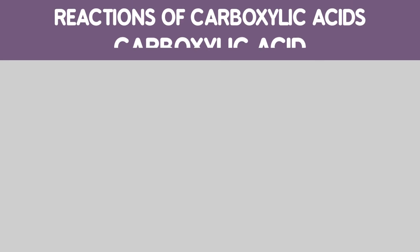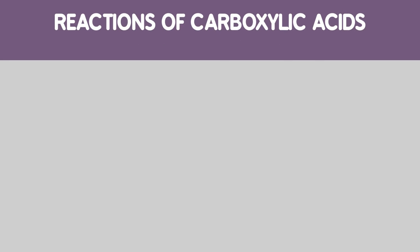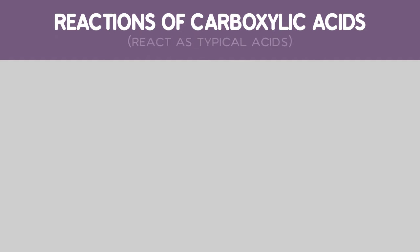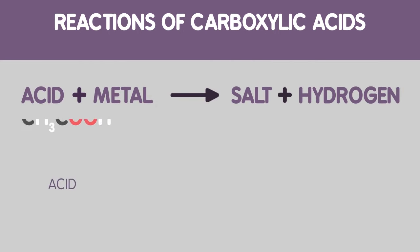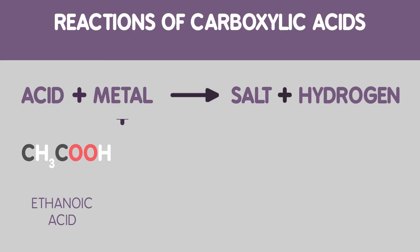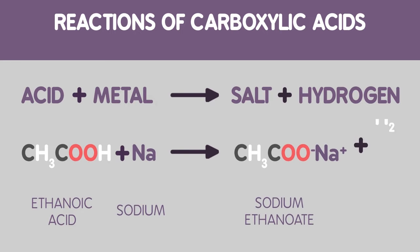Let's have a look at the reactions of carboxylic acids. Carboxylic acids react as typical acids. Number one: acid plus metal goes to salt plus hydrogen. For example, ethanoic acid plus sodium gives sodium ethanoate and hydrogen.